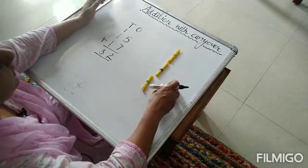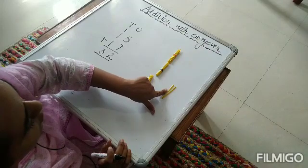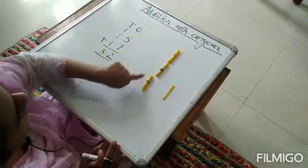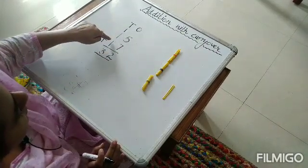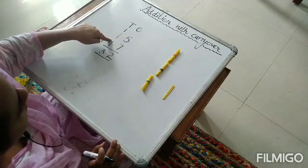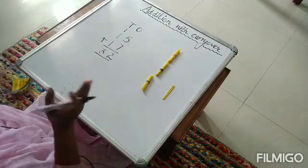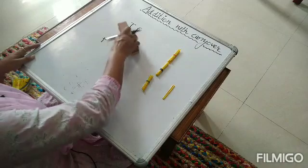As I have told you, in one's position only 2 are there and there are 3 bundles. 1 plus 1 makes 2. Then 2 plus 1 is equal to 3. So this makes 32. Let's see the next example.